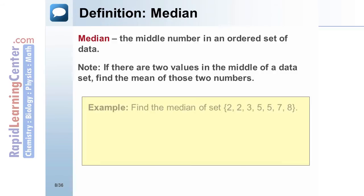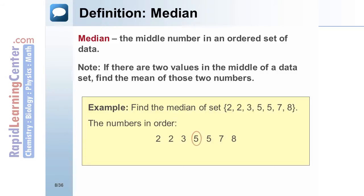Example: Find the median of the set 2, 2, 3, 5, 5, 7, 8. The numbers in order are 2, 2, 3, 5, 5, 7, 8. The middle number in this ordered set is 5. The median of this data set is 5.